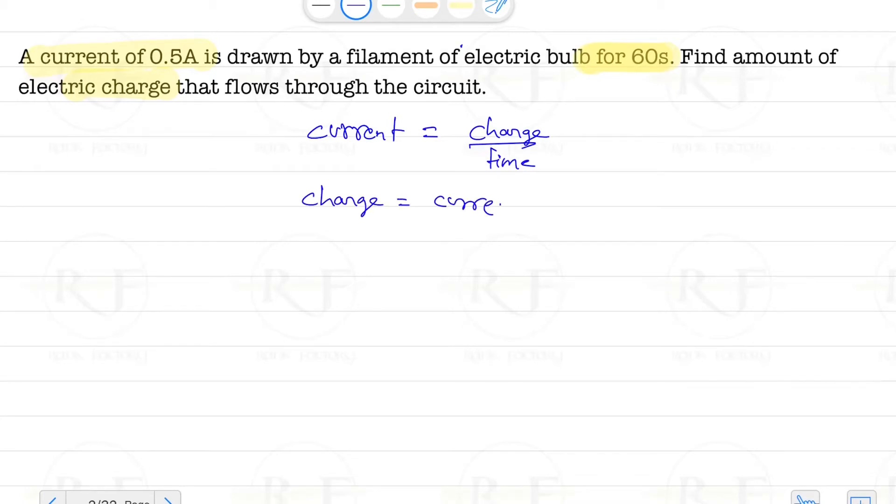Now, from the question, current I is given as 0.5 ampere and time is given as 60 seconds. So charge Q will be equals to I into t. In that case, it will be equals to